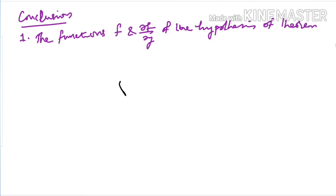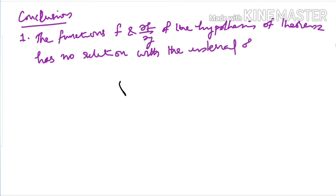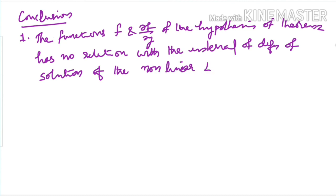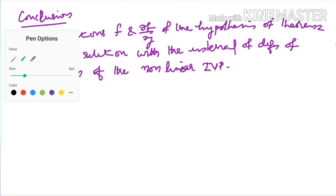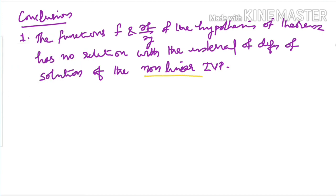Conclusion: The hypothesis of Theorem 2 — that f and ∂f/∂y are continuous — has no relation with the interval of definition of the solution of the non-linear IVP. In the non-linear IVP case, f and ∂f/∂y are the hypothesis functions, and these have no bearing on the interval of definition of the solution.